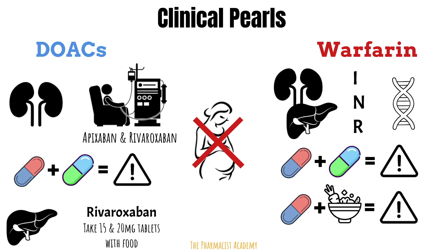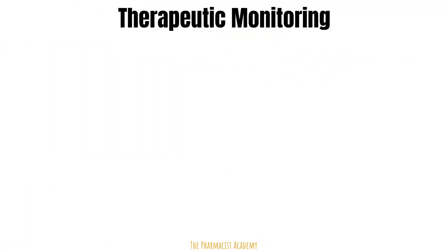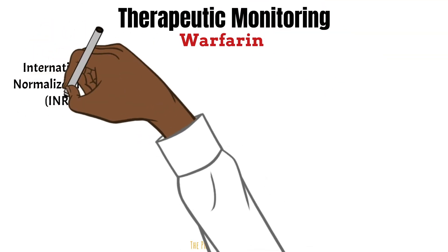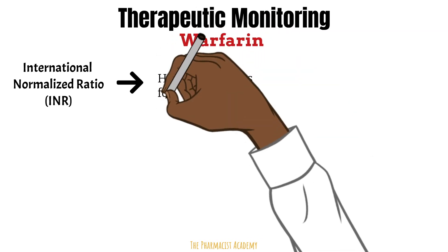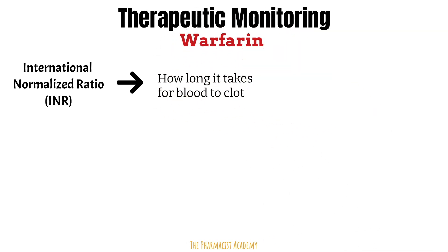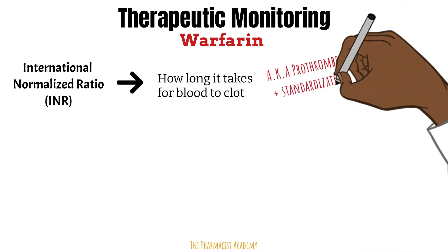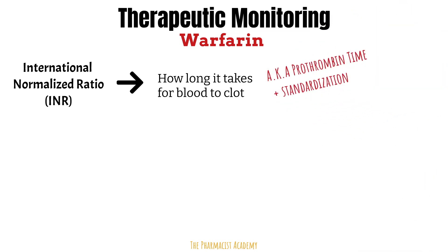Because warfarin has a delayed onset, unpredictable metabolism, and genetic influences, its therapeutic effect must be closely monitored using the international normalized ratio, also known as INR. It tells you how long it takes for the blood to clot. It's essentially the same as prothrombin time but accounts for variations in reagents used across labs, which was leading to fluctuations in normal ranges — so it was standardized as the INR.